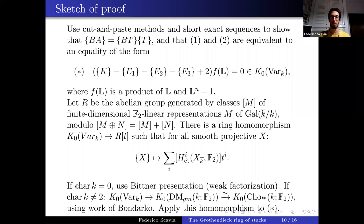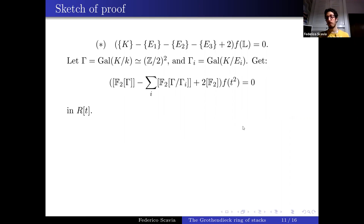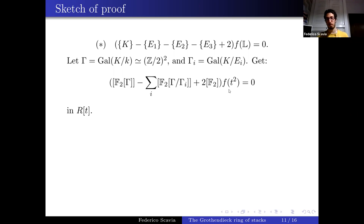Applying the homomorphism to our equation: the class of P1 has cohomology 1 in degrees 0 and 2, so it maps to 1 + t^2, meaning L maps to t^2. If Γ is the Galois group of the extension and Γ_i are the subgroups corresponding to the E_i's, we get: [F2[Γ]] minus the sum of [F2[Γ/Γ_i]] plus twice the class of F2, times f(t^2), equals zero. Étale algebras are sent to the corresponding permutation representation.